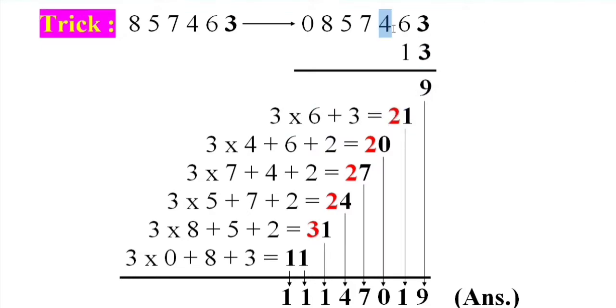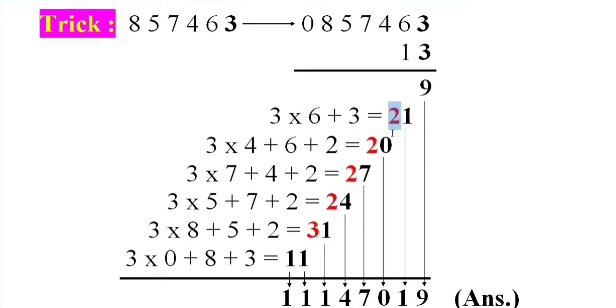3 into 4 plus 6 plus carry 2 equal 20. 3 into 7 plus 4 plus carry 2 equal 27. 3 into 5 plus 7 plus carry 2 equal 24.